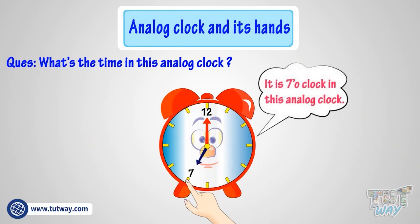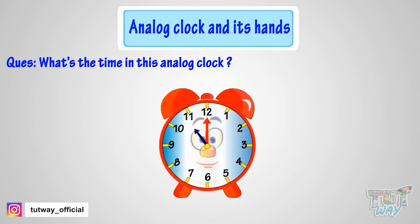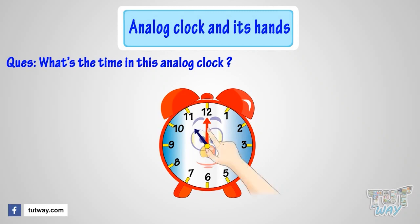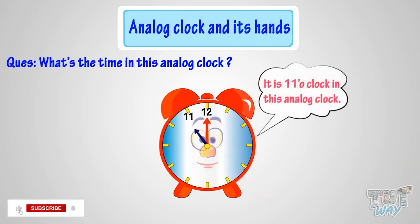Next example. Can you tell me what's the time in this analog clock? When the minute hand is at 12, it is time to the hour. But to which hour? The hour hand tells the hour. As the hour hand is pointing at 11, it's 11 o'clock.